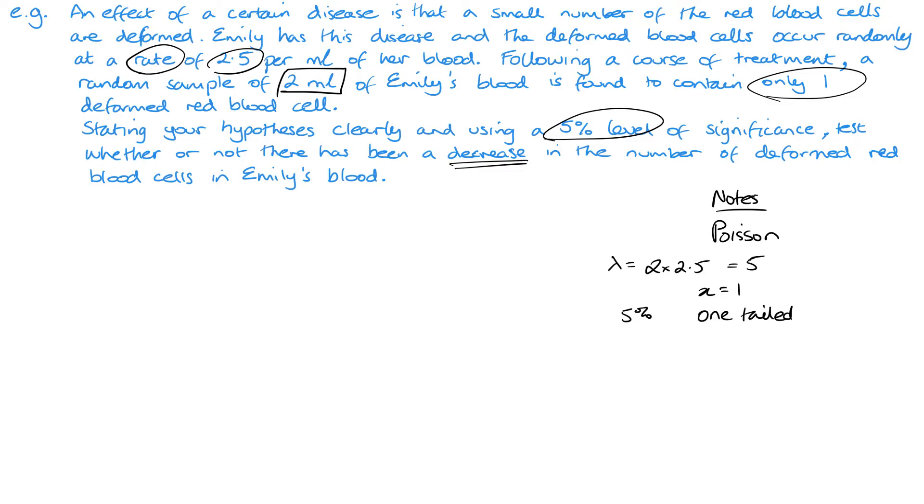So if we carry on, it's found to contain only one deformed blood cell, so x is going to be one. State your hypotheses clearly at the five percent significance level whether or not there has been a decrease. So one tail, because we're not looking at if there's been a change, just a decrease. So now I have enough information to start my question.